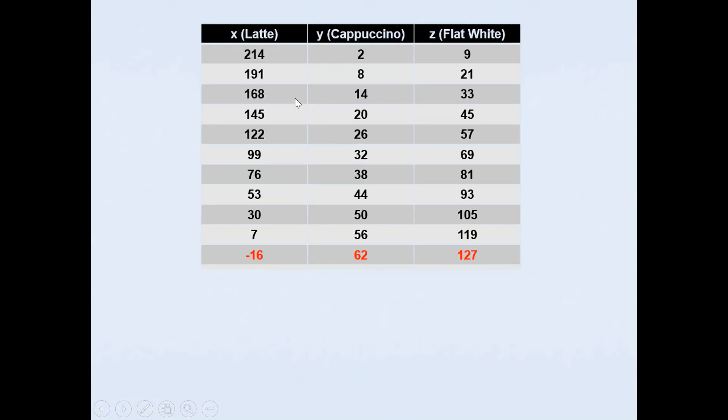The table above shows multiple solutions. So in this case the owner can produce 214 cups of latte, 2 cups of cappuccino and 9 cups of flat white. We cannot have 62 cups of cappuccino and 127 cups of flat white because it's giving us a negative value for latte, so we have to reject that one. This table tells us that the solutions for latte will be all the positive integer values between 7 and 214. Cappuccinos will be between 2 and 56 cups, and flat white will be between 9 and 119.